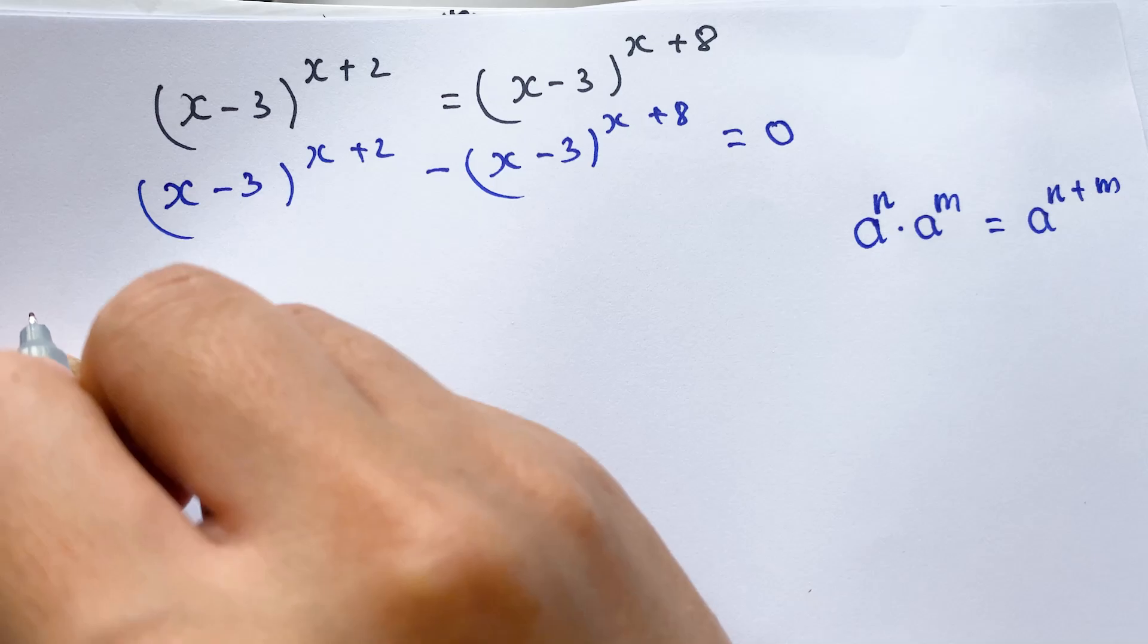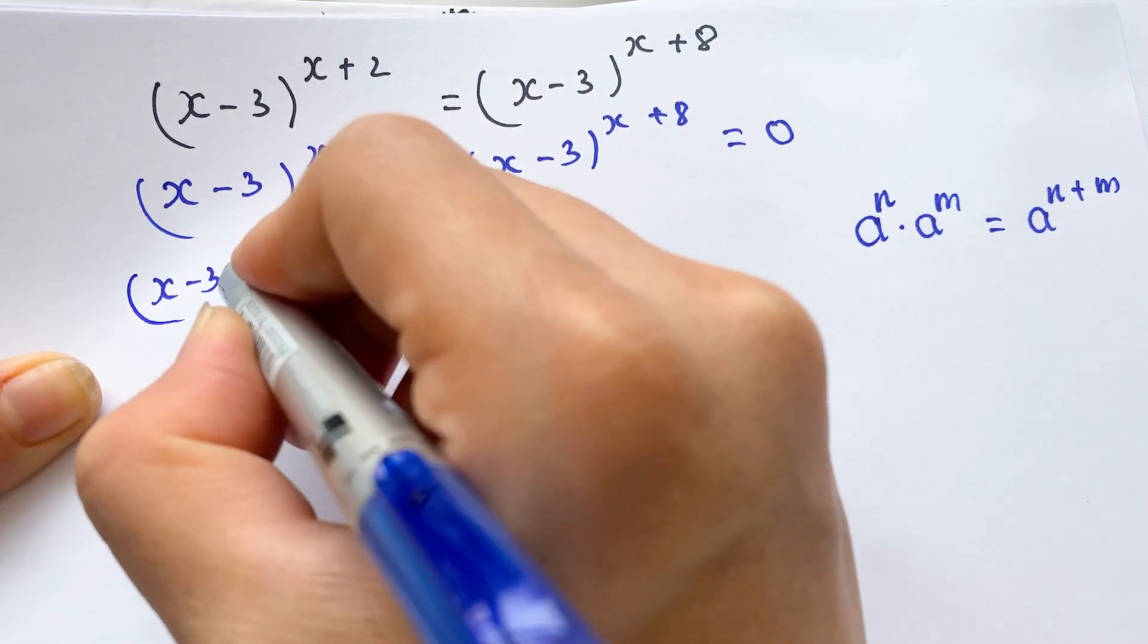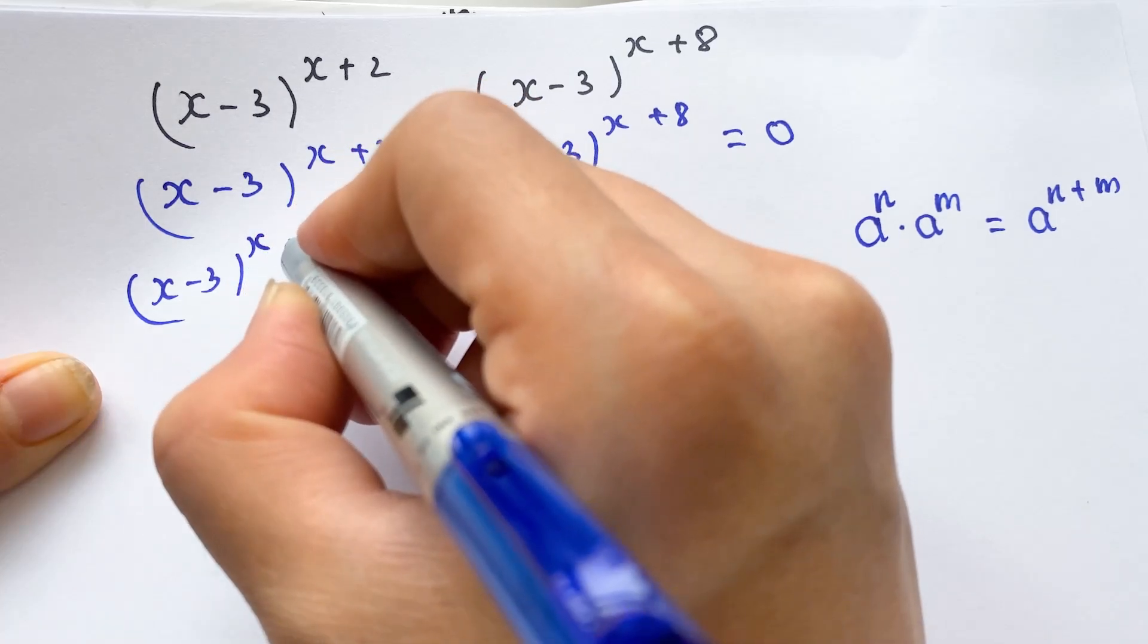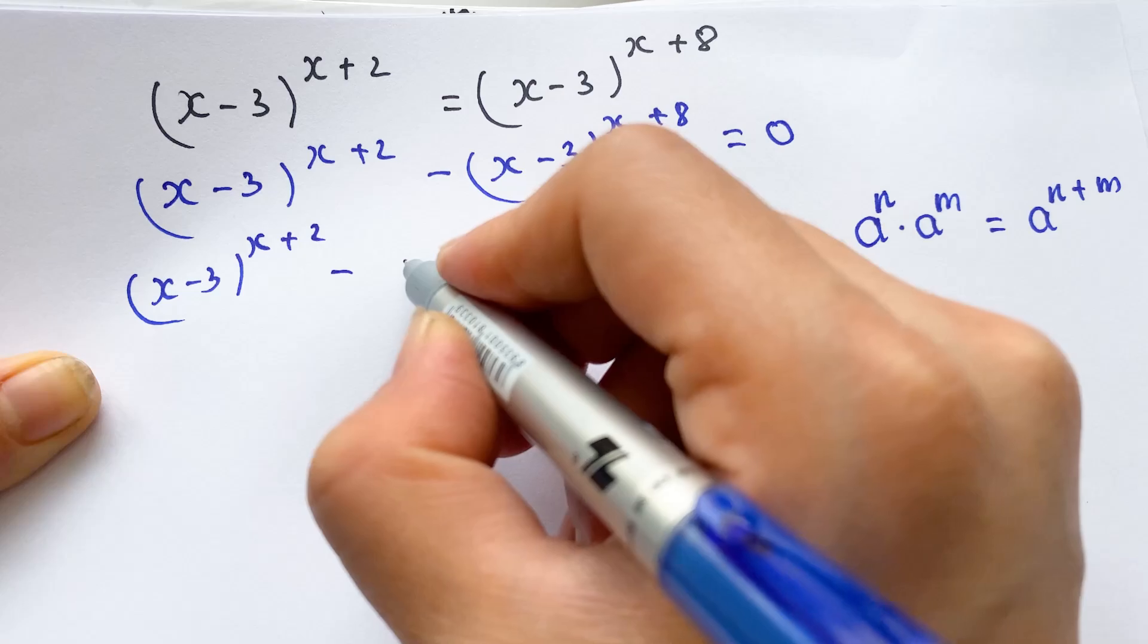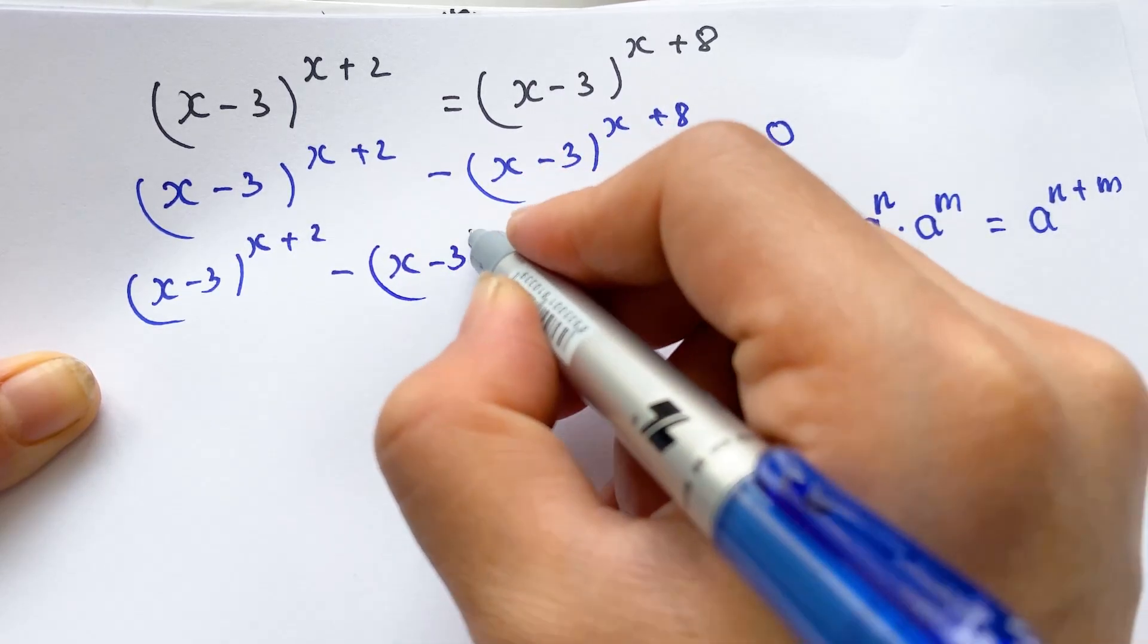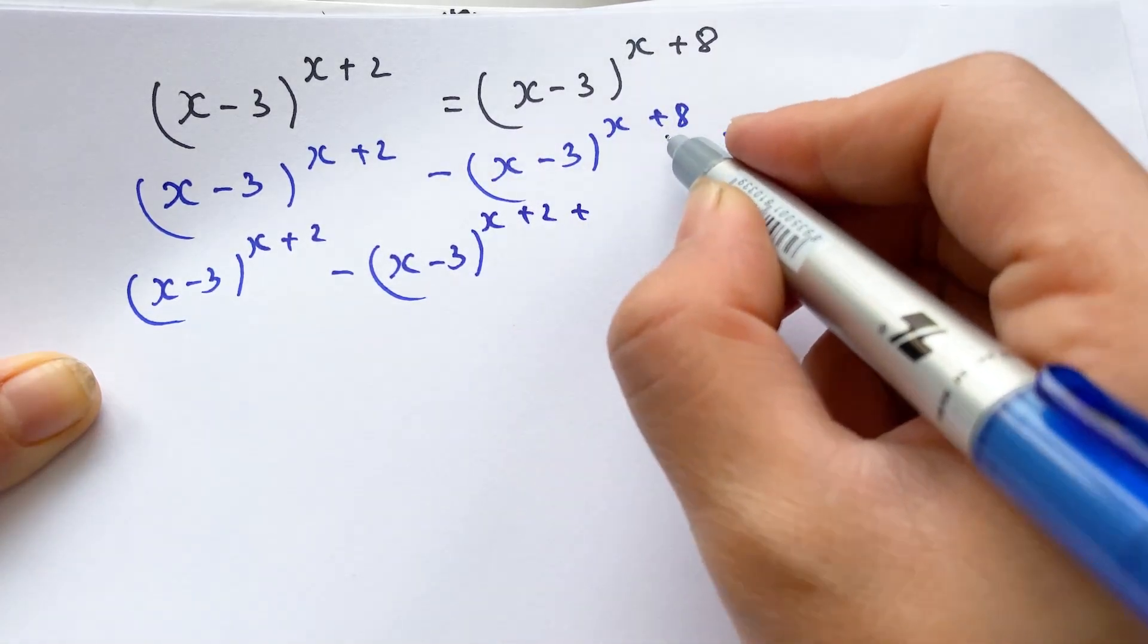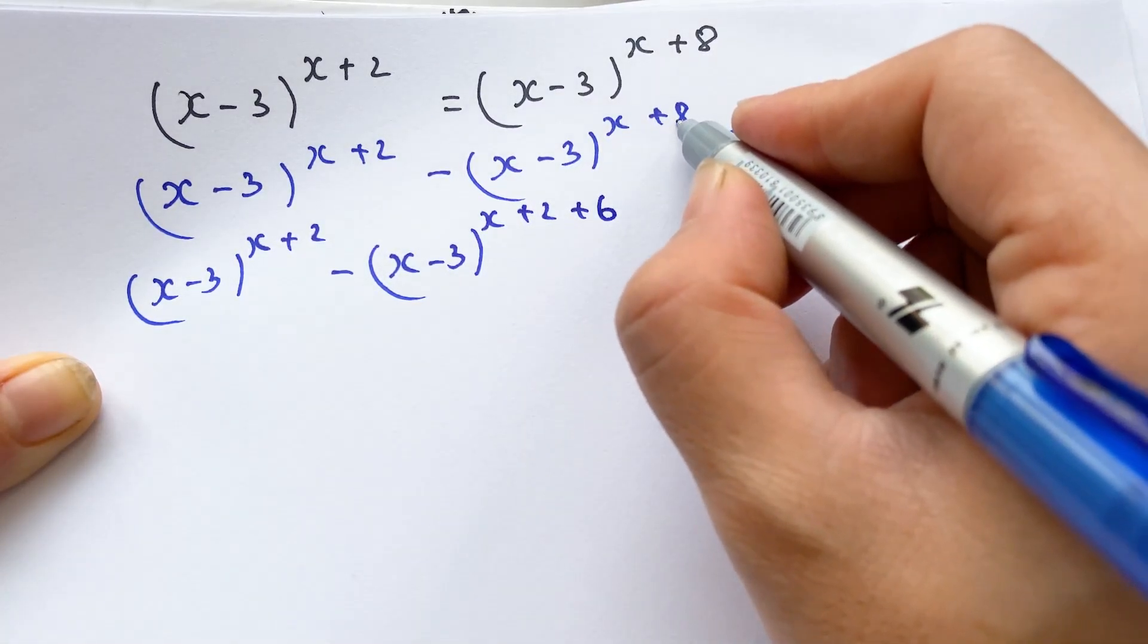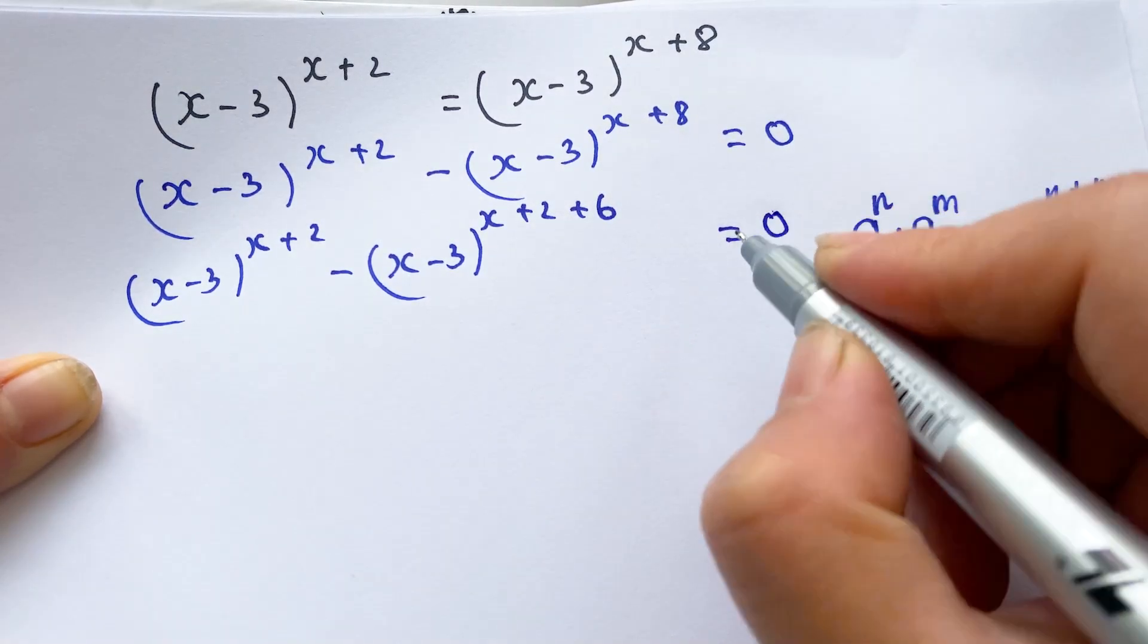On the right hand side, we can say (x-3)^(x+2) minus (x-3)^(x+2+6). Break it down, it equals x+2 plus 6 equals 0, right?